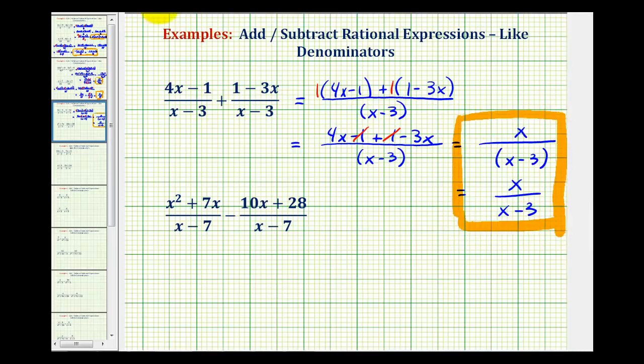Let's take a look at our second example. Again, notice how we have a common denominator of the quantity x minus 7. So the denominator is going to stay the quantity x minus 7, and then we'll subtract the numerators. We'll have the quantity x squared plus 7x minus the quantity 10x plus 28.